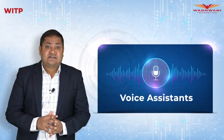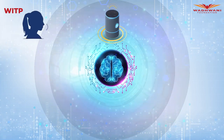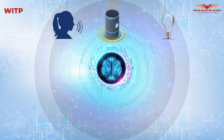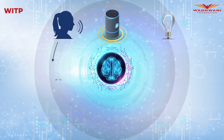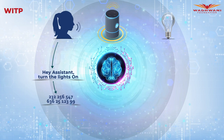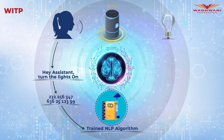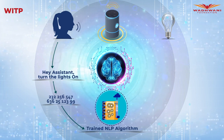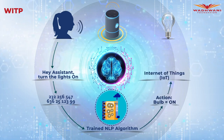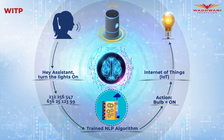Voice assistants are a blend of multiple emerging technologies. When a human says 'Hey assistant, turn the lights on,' speech recognition converts the spoken words to text. That text is then converted to numbers the system understands, which go through trained NLP algorithms to generate an action message. The action message is conveyed to the light bulb using Internet of Things, or IoT, and finally the bulb is turned on — all in a fraction of a second.